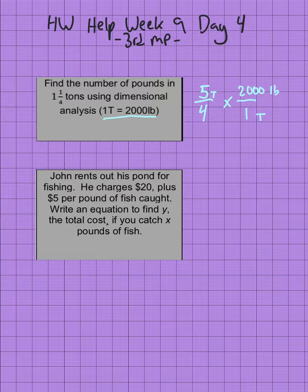Now I'm going to do some reducing first. The ton unit cancels, and the 5 and 1 don't reduce, but 4 and 2,000 do.